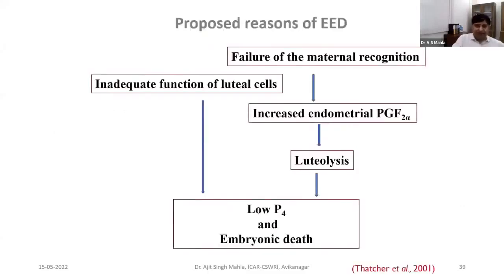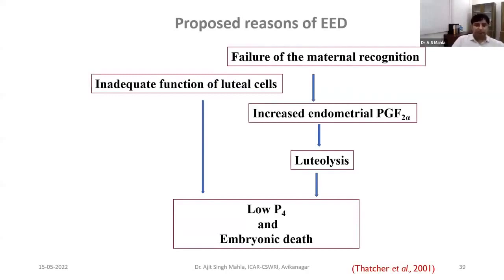Regarding the mechanism of early embryonic death: around the time of maternal recognition of pregnancy — which is around 16 to 17 days in goat and 13 to 14 days in sheep — the fetus secretes interferon signals indicating its presence, reducing endometrial PGF-2α production, because PGF-2α is responsible for luteolysis and return to estrus. When there is failure of maternal recognition of pregnancy, increased endometrial prostaglandin production leads to luteolysis and embryonic death. The strategy to reduce early embryonic death is to decrease prostaglandin production or improve progesterone production around the time of maternal recognition of pregnancy.